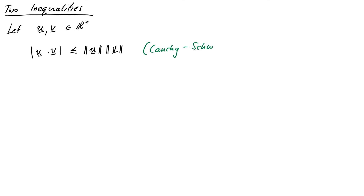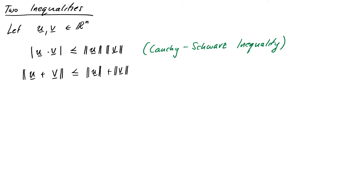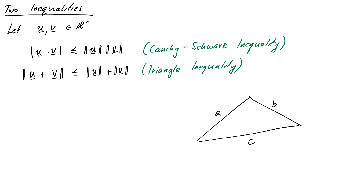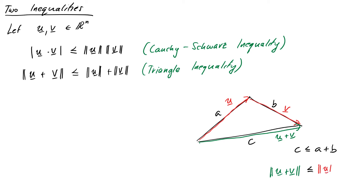In 2D and 3D we can use our cosine result to prove Cauchy-Schwarz, but we can prove it in general, which we'll do in a minute. The other inequality is called the triangle inequality, and it says that ‖u + v‖ ≤ ‖u‖ + ‖v‖. You can see how this works and why it's called the triangle inequality — draw a triangle with three sides a, b, and c. The triangle inequality basically says that side c must be smaller than the sum of a and b. Replacing a with vector u, b with vector v, and c with vector u + v (by head-to-tail addition), the same statement gives us ‖u + v‖ ≤ ‖u‖ + ‖v‖.